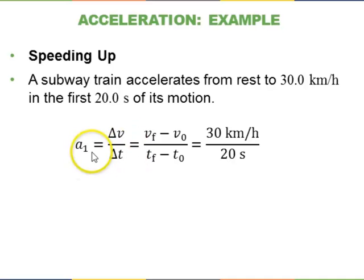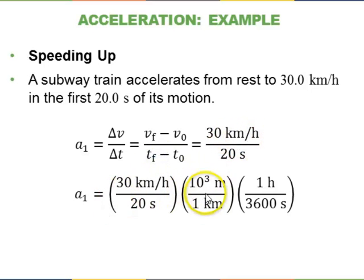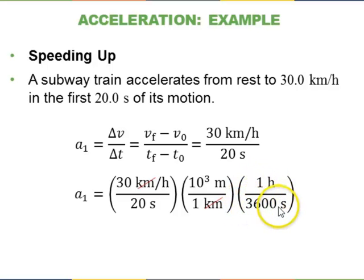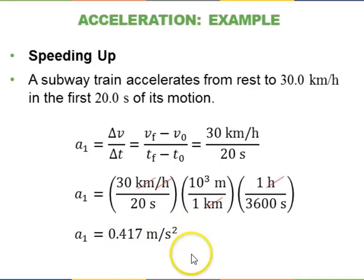For A1 (speeding up): 30 km/h minus 0 divided by 20 seconds. Converting to SI units — multiplying by 1000 meters per kilometer and dividing by 3600 seconds per hour — gives 30 times 1000 divided by 20 times 3600, which equals 0.417 meters per second squared, positive.